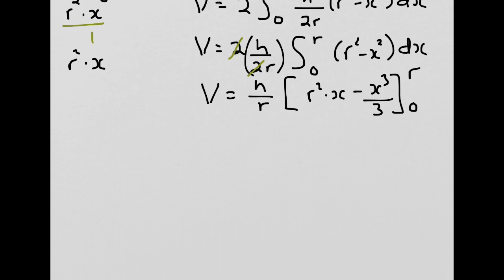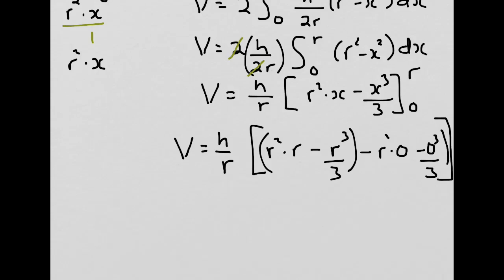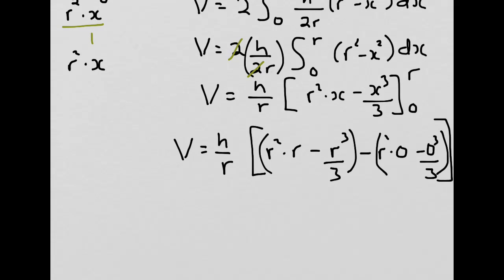Let's finish by substituting r wherever we see an x, and 0 wherever we see an x, and subtracting them. We get V equals h over r times (r²·r - r³/3 - r²·0 - 0³/3). So we are left with V equals h over r times (r³ - r³/3).